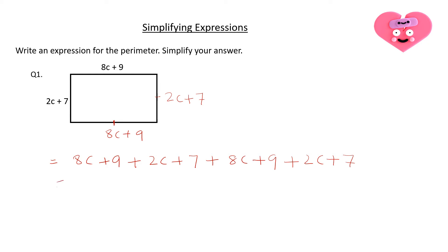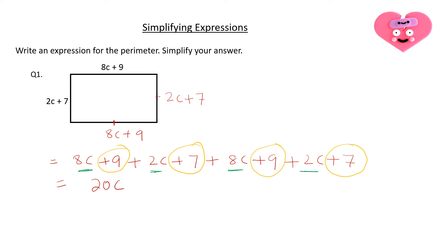After that I'll try to simplify the like terms. We know that 8c, 2c, 8c, and 2c are like terms as they share the same variable c. So 8 plus 2 is 10, plus 8 is 18, plus 2 is 20c. Next we add all the constant numbers: 9 plus 7 plus 9 plus 7 equals 32. So this is the perimeter expression for this rectangle.